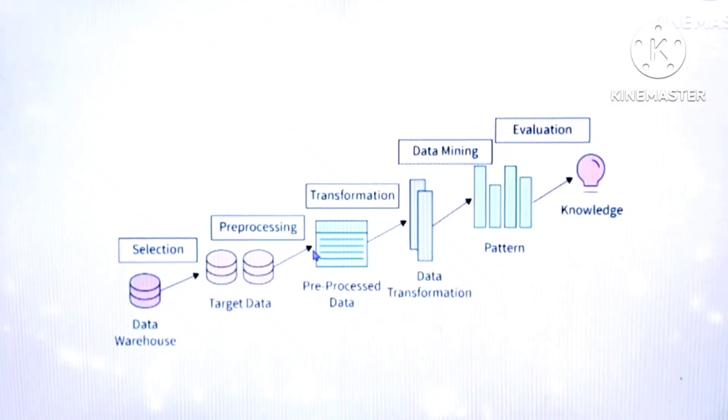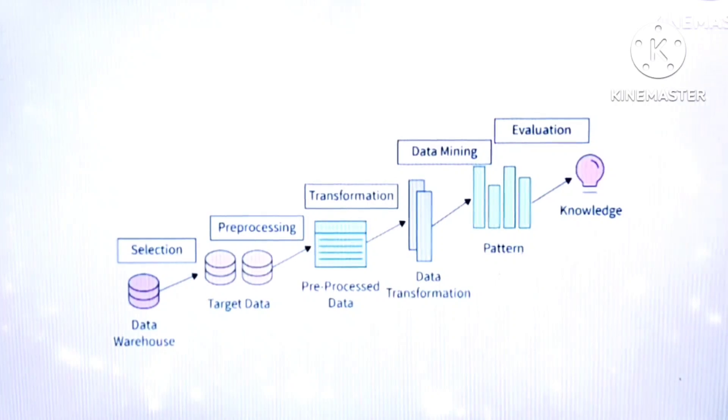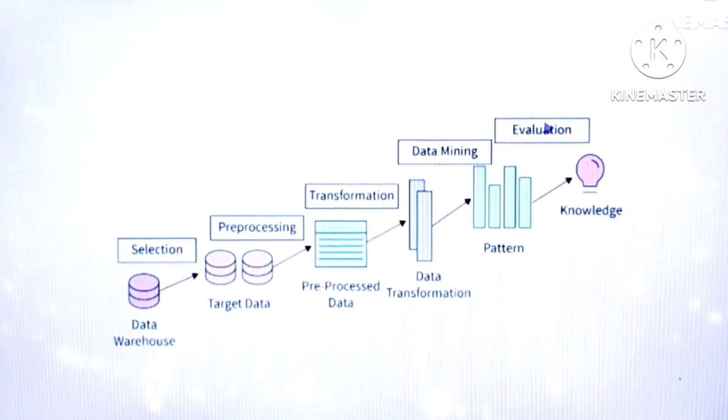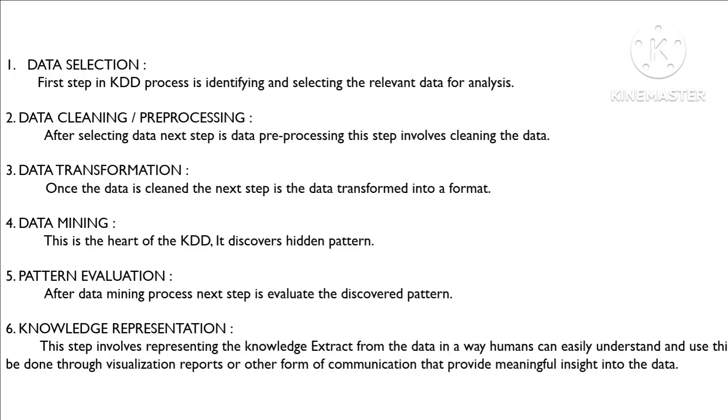So next step is data transformation. In this step, it will transform the data in the format wise. Here it is data transformation. Next step is data mining. It will search interesting pattern. This pattern we have to convert it into knowledge. That work will be done by the evaluation. Then we will receive knowledge. We have to represent knowledge, right? So this is knowledge representation. So these are the simple steps of KDD process. For exam purpose, this is very important topic. So I hope you all understand this topic.